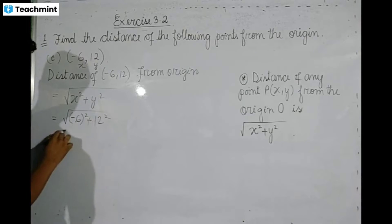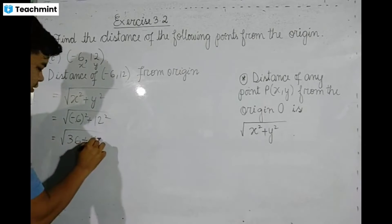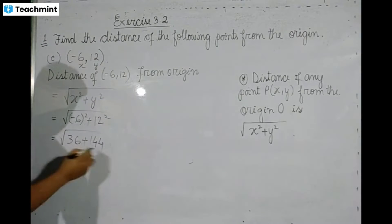What is it? 6 square. Minus 6 whole square is 36. It's 36 plus 12 square. 144. What is it? 36 plus 144 is 180.